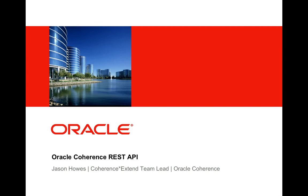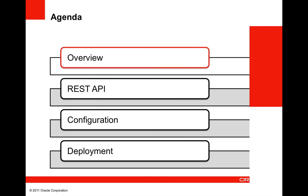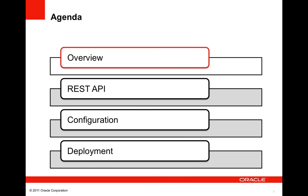Hello and welcome to the Coherence Screencast Series. My name is Jason Howes and I'm a team lead on the Oracle Coherence product. Today I'm going to give you an overview of the new REST API for Coherence. I'll start with a high-level overview of REST, then cover the features of the new Coherence REST API, and finish with how it is configured and deployed.